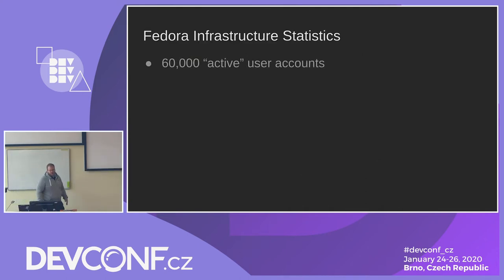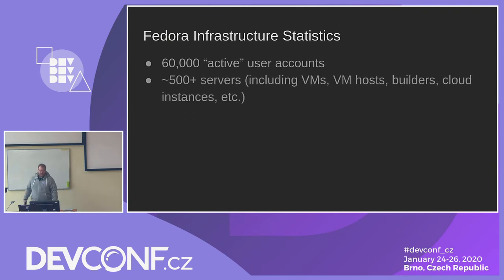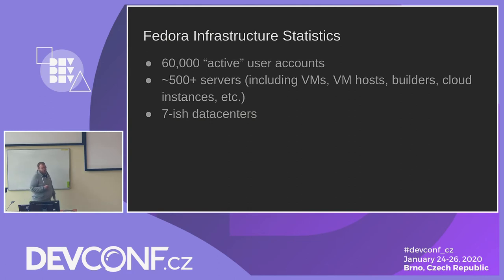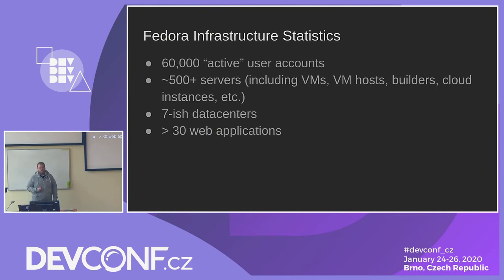A couple of statistics about the Fedora infrastructure. In the database right now for our current account system, we have 60,000 accounts labeled active, though in practice probably about half of those are actively used. We have around 500 servers including VMs, builders, virt hosts, and cloud instances, scattered across a multitude of data centers — donated racks, cloud instances in different regions, two primary data centers in Phoenix and on the East Coast.